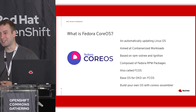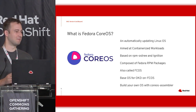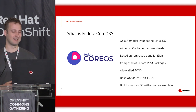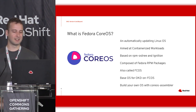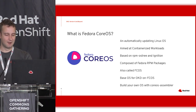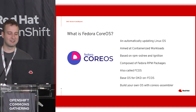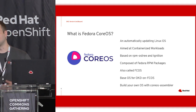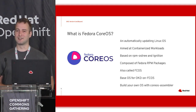Fedora CoreOS is also called FCOS — that's what we developers at Red Hat like to use. We chose it as the base OS for OKD on FCOS, which is the alpha right now. The CoreOS assembler — if you want to try to build your own OS, it's not too hard with it. It's a really cool thing, try it out.